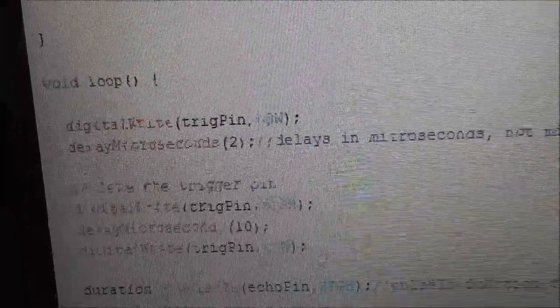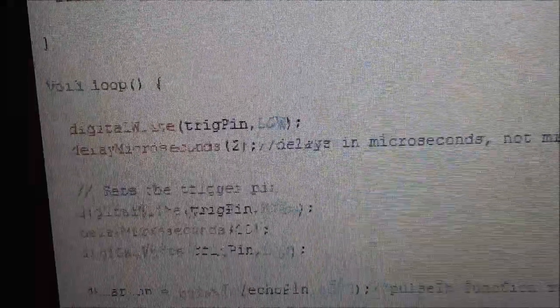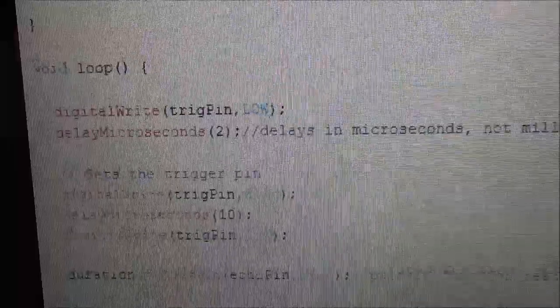So the difference between a millisecond and a microsecond is that a millisecond is 10 to the power of minus 3, whereas a microsecond is 10 to the power of minus 6. That's the reason.